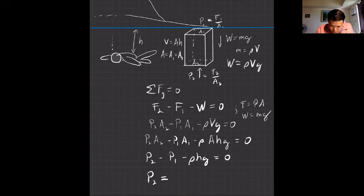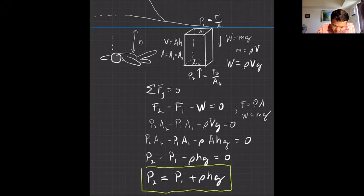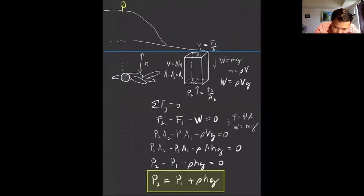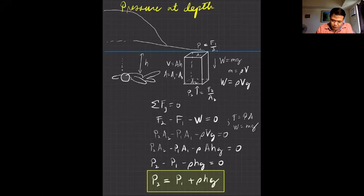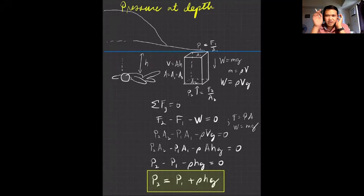This is our equation for pressure at depth: P2 = P1 + ρhg. As you go deeper — as h increases — the pressure increases. P1 is the atmospheric pressure, ρ (density) and g (gravity) are constants, so the only variable is h. Therefore, as you descend in the ocean, the pressure gets stronger and stronger.